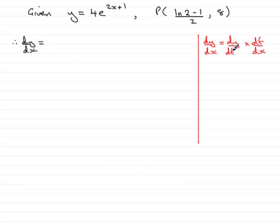So in this example, what is t? t is going to be the 2x plus 1. In other words, that means y is going to be 4e to the t, where t is 2x plus 1.